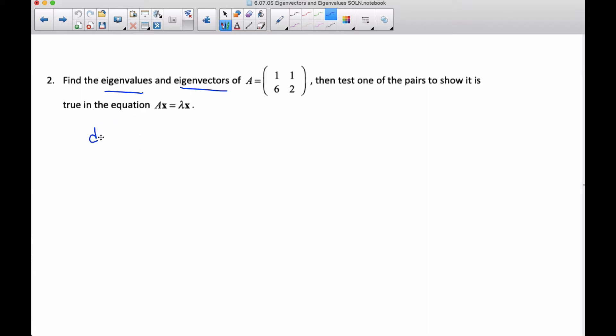So I know the first thing I'm going to do is I'm going to solve the equation det(A minus lambda I) is equal to zero, which means that one minus lambda, one, six, two minus lambda is this matrix. I'm going to find the determinant of that equal to zero.